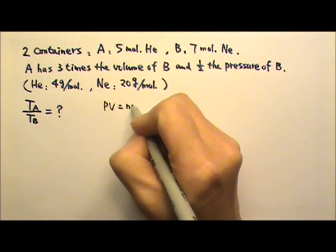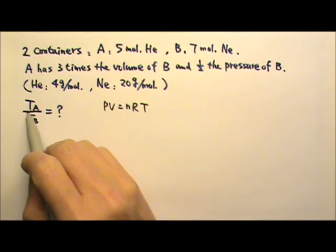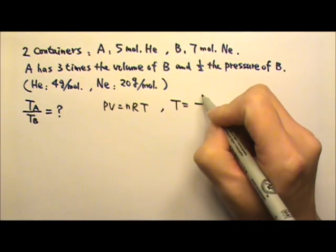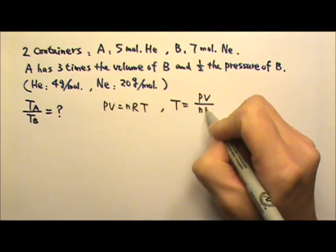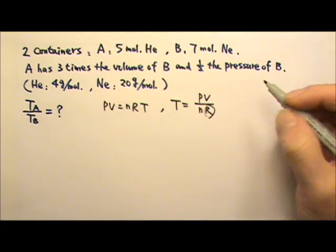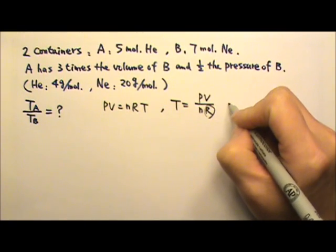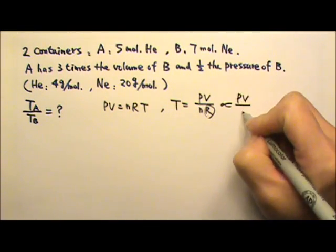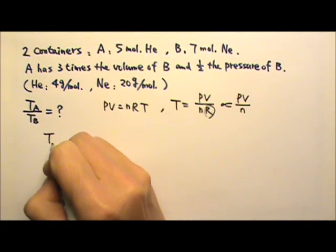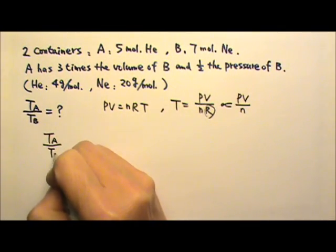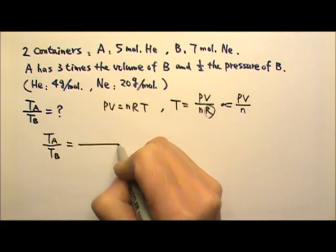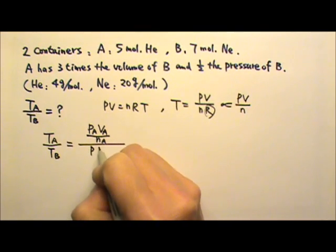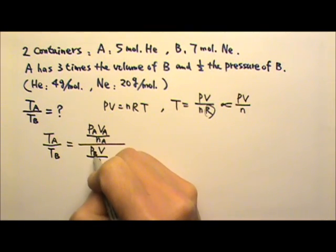We use PV = nRT. We want information about temperature, so we solve for T: T equals PV over nR. Since R, the gas constant, is a constant, the temperature is proportional to PV over n. Therefore the ratio T_A over T_B equals (PV/n) for A divided by (PV/n) for B.